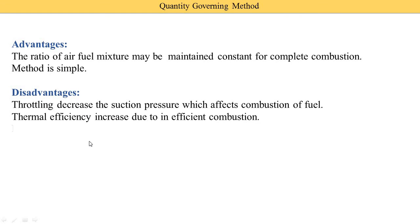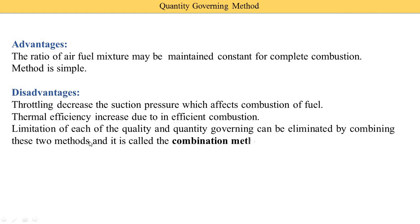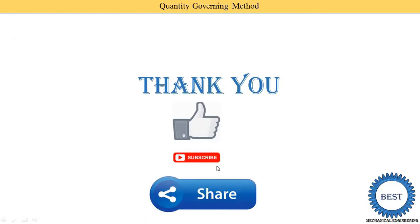The limitation of each of the quality and quantity governing methods can be eliminated by combining these two methods together. The limitations of quality governing as well as quantity governing can be eliminated by combining them, and it is called the combination method of governing.